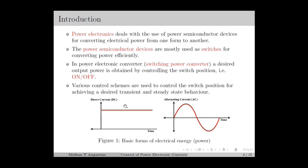In power conversion, we basically convert the electrical power from DC to AC or AC to DC. Similarly, we can also have DC to DC conversion, in which we convert DC power from one level to a different level, and also AC to AC conversion. For efficient conversion of electrical power, power semiconductor devices are usually used as switches, so the power electronic converter is also known as a switching power converter. We will also call it a power converter or simply a converter.